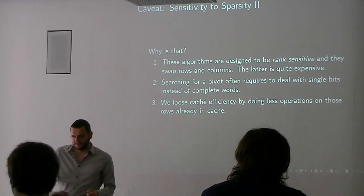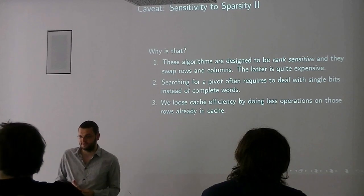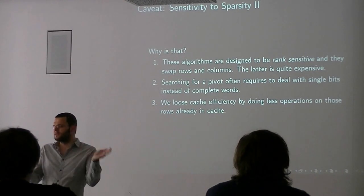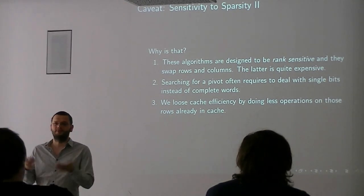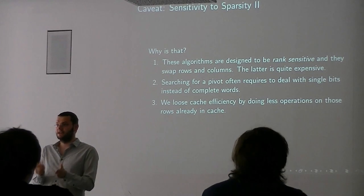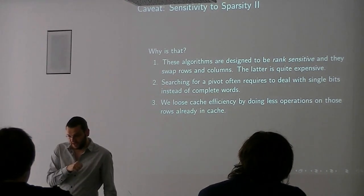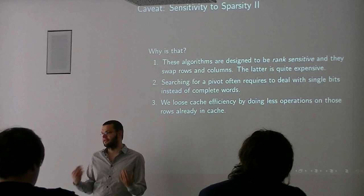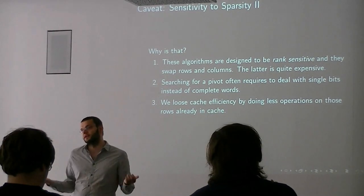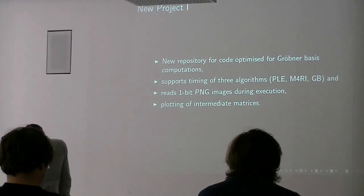So why is this? As I mentioned, they are meant to be rank sensitive, and swapping columns is expensive. And then when you search for pivots, you actually - most of our operations they deal with 64 bits or 128 bits at a time, because you do just an XOR of the words. When you're looking for pivots, you really ask about the bits. So you have to go down to the bit level, which is more expensive. And of course, we lose cache efficiency, because we're doing less arithmetic operations per cache load and cache store. So we're using a bit less efficiently.